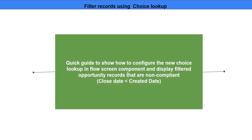We'll see step by step how to add a choice lookup component, configure records, apply filters, and display the filtered records on screen. We are trying to filter opportunity records that are non-compliant — a common scenario where users create deals or opportunities with a backdated closed date.